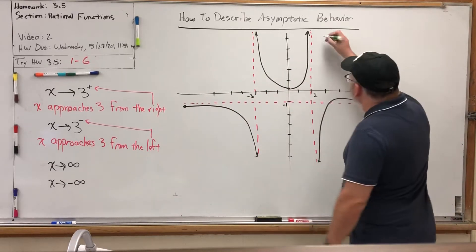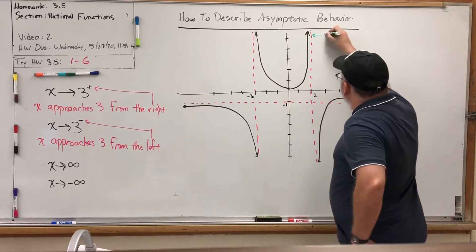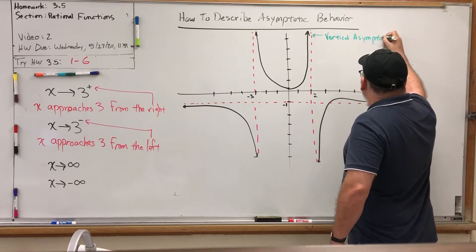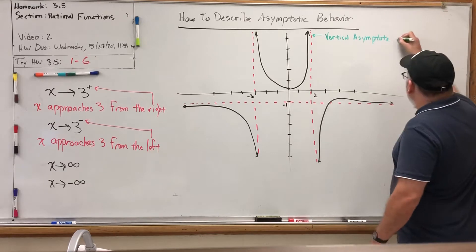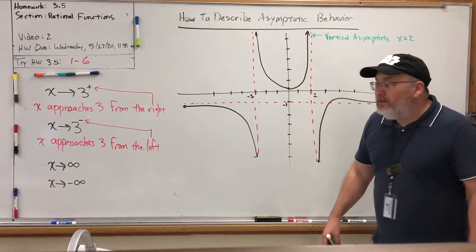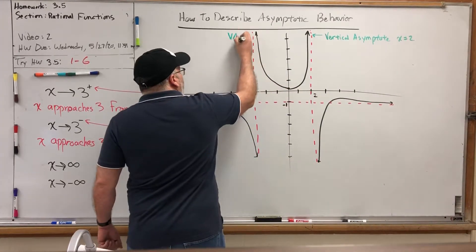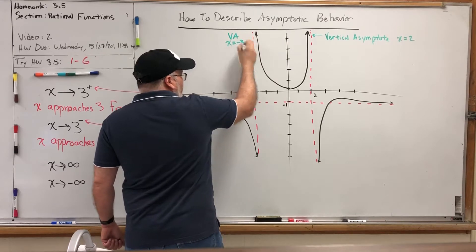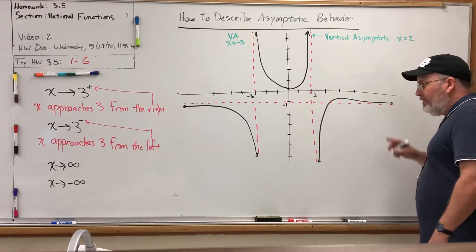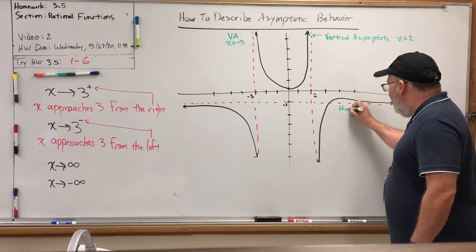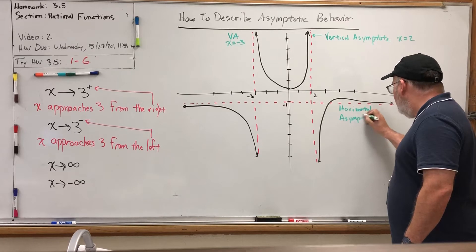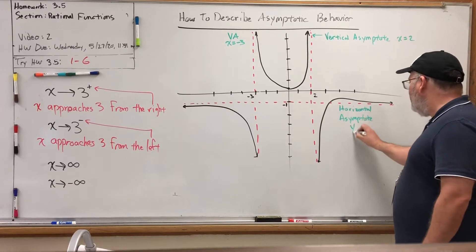For example, this vertical line is a vertical asymptote — specifically its equation was x equals 2. In the future I'll abbreviate vertical asymptote as VA. There's also a vertical asymptote whose equation is x equals negative 3. You can also have a horizontal asymptote — I'll abbreviate that as HA — and in this case the equation of that one is y equals negative 1.